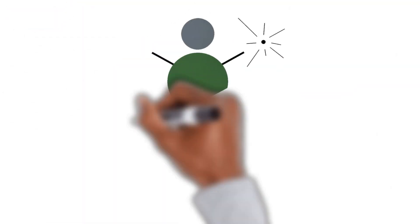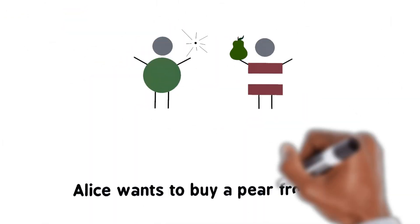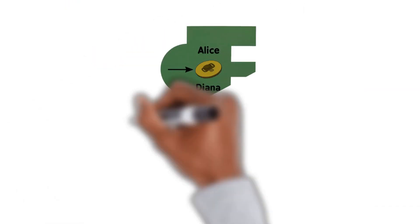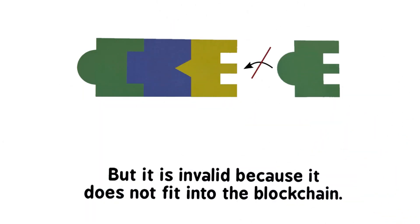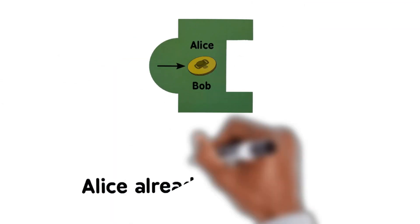Alice pretends she still has the coin. Alice wants to buy a pair from Diana. This is also a transaction. But it is invalid because it does not fit into the blockchain. Alice already spent her coin.